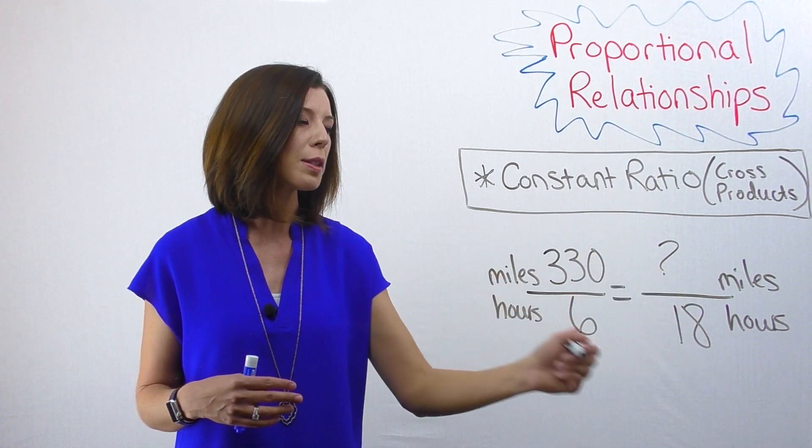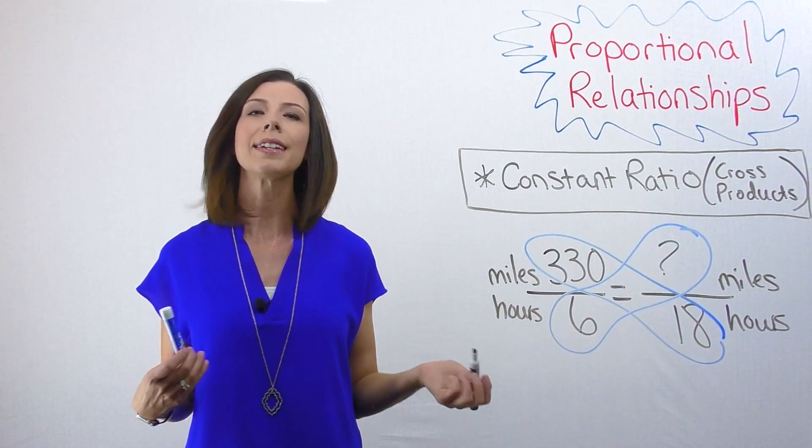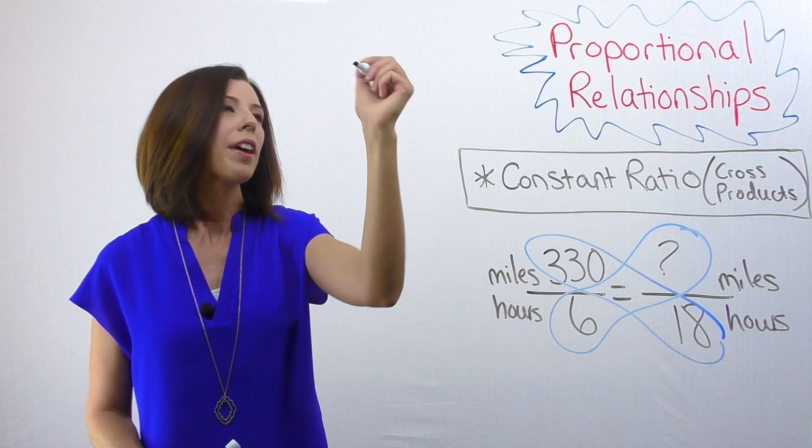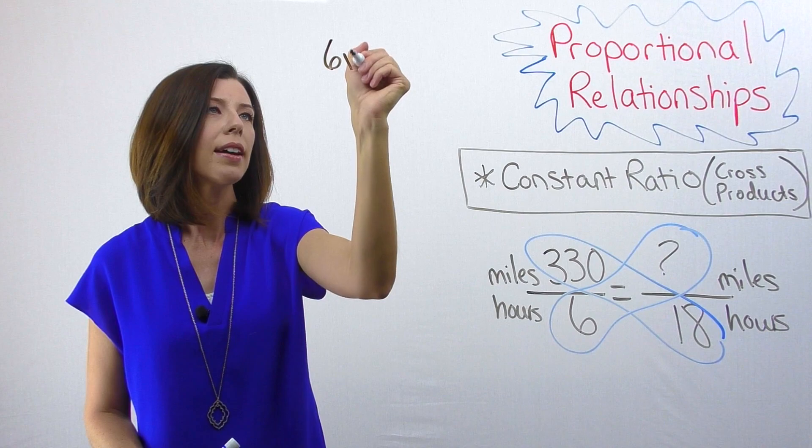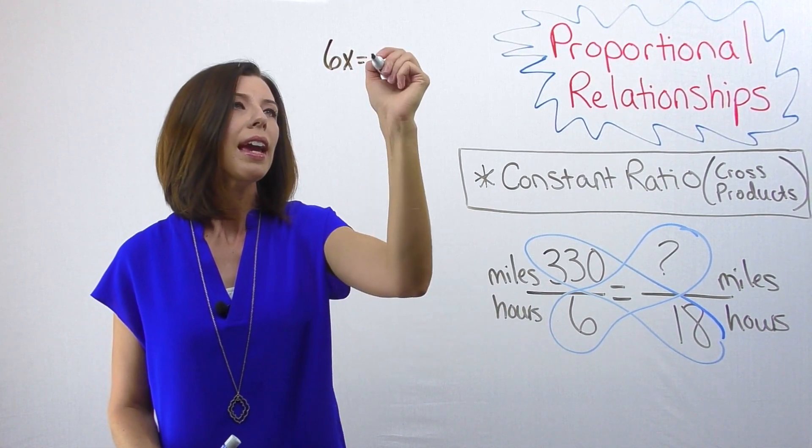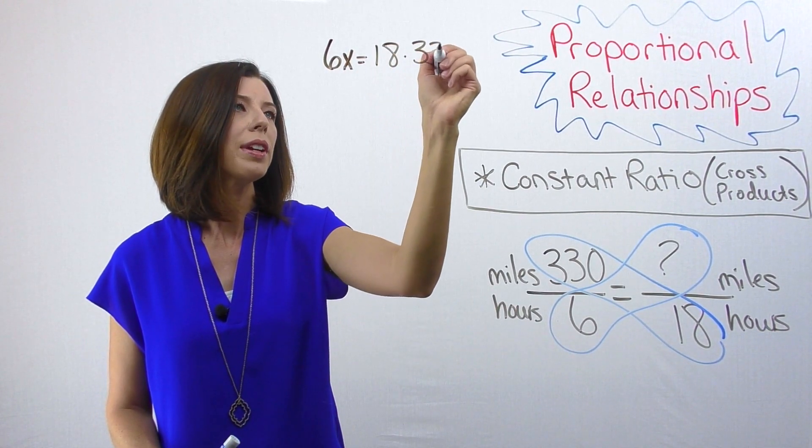We can go ahead and do our cross products here, and I can solve this algebraically. I know that 6x equals 18 times 330.